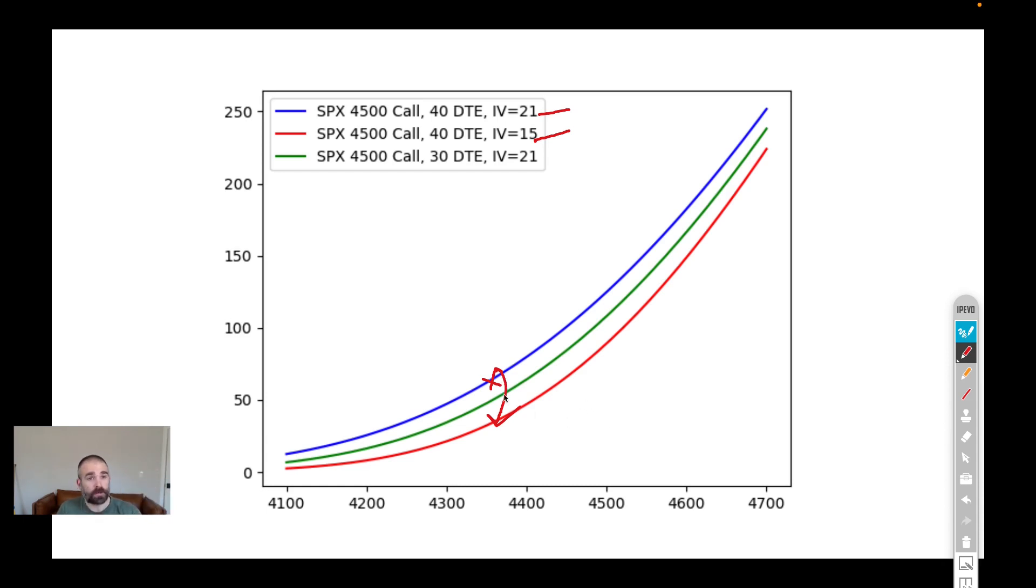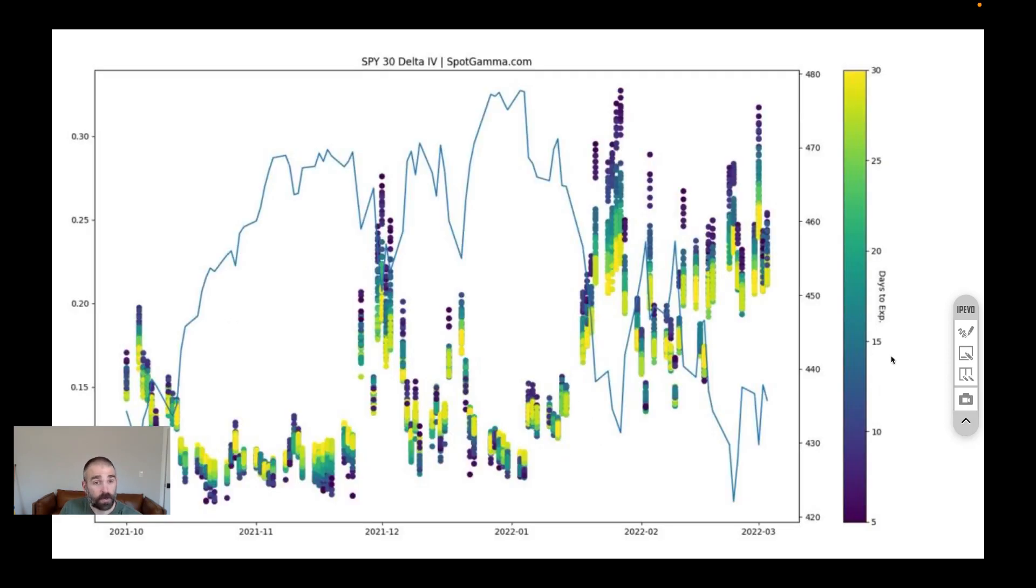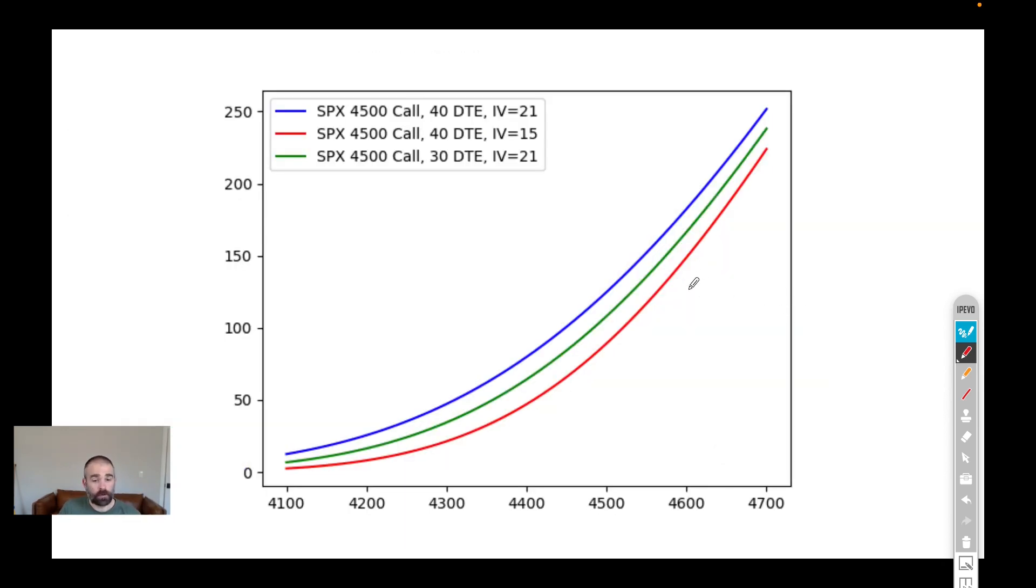In this case, the value of that call is going to come down as implied volatility drops. So you're going to make some money as the market rallies, but as implied volatility drops, that's going to hurt your position. Remember where we are right now. The VIX is at 33. We are at a real high. So the odds are that implied volatility will drop rather substantially. The other thing that we would note, you have this implied volatility drag.